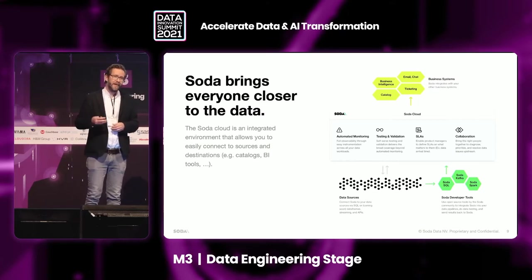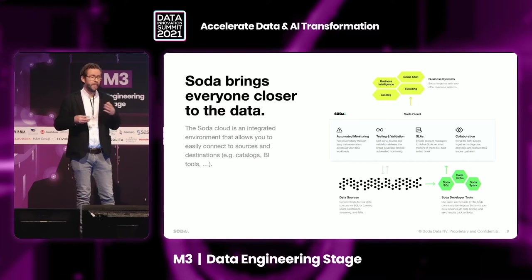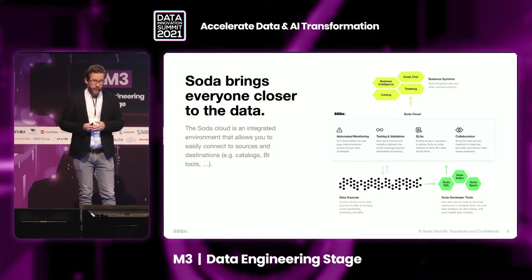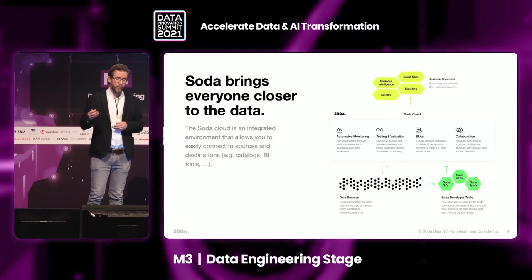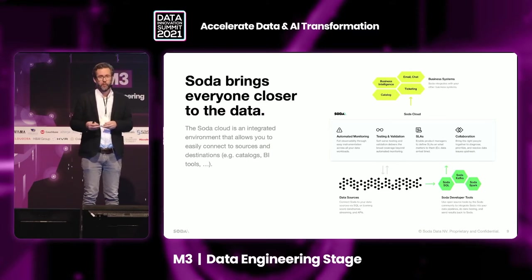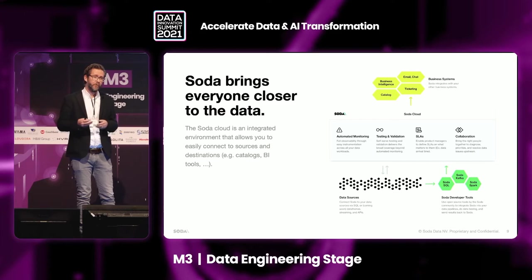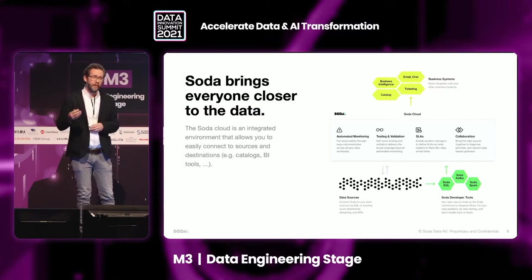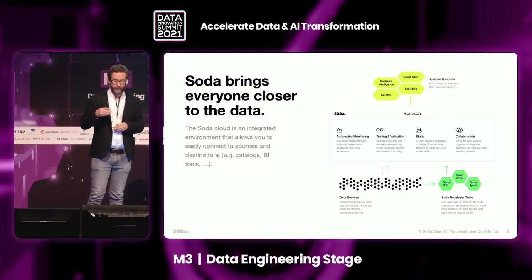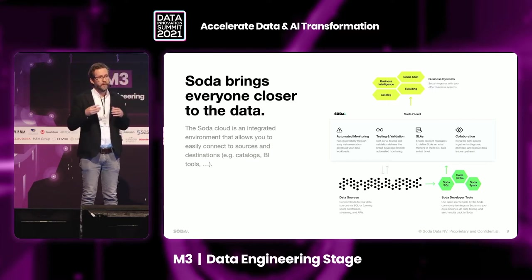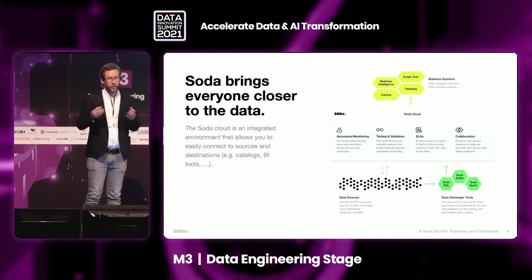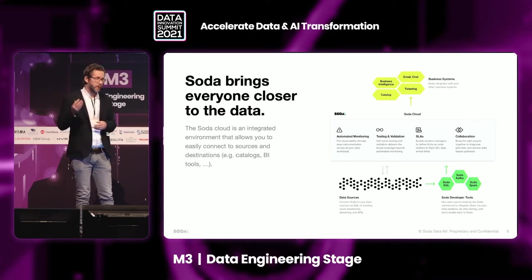Soda Cloud adds additional functionality like time series anomaly detection and change over time. In addition to Soda SQL, we have significant support for Spark. Our Spark support is twofold: we provide a Spark dialect as part of Soda SQL, and we also have Soda Spark, which allows you to interact directly with Spark data frames. It works exactly the same way — you have a YAML file that you configure, you tell it which metrics to collect like min, max, averages, and standard deviation, and you build test cases in there as well, which are then uploaded to Soda Cloud.